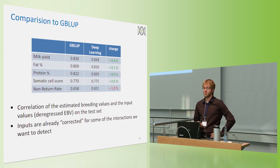But what we also have to note here is that we are working on deregressed breeding values. That means that some of the epistatic interactions we are wanting to detect are already removed from the model just by working on deregressed breeding values.